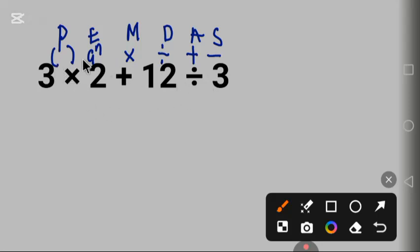We have multiplication. Is he here? Yes. So let's work multiplication. 3 times 2 is 6 plus 12 divided by 3.